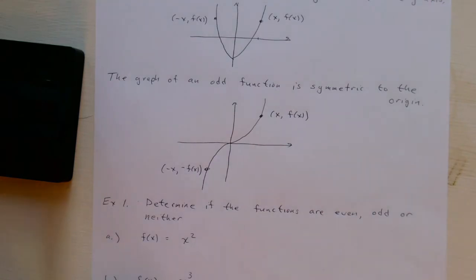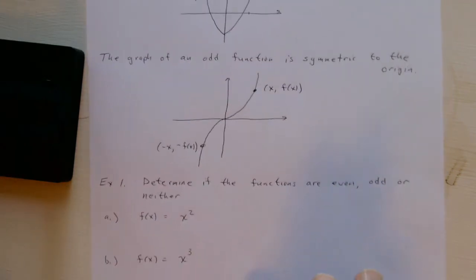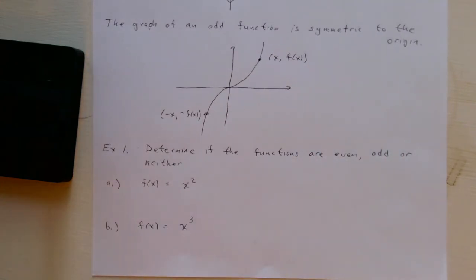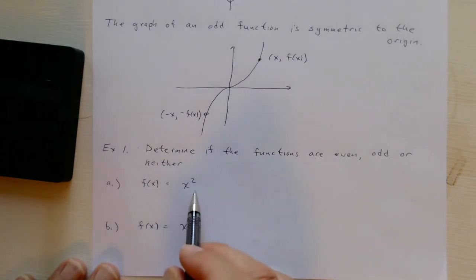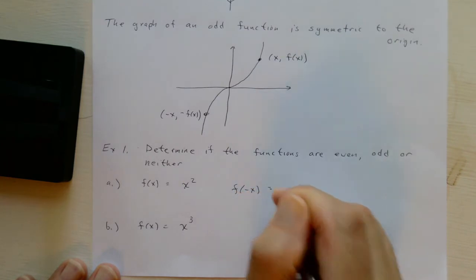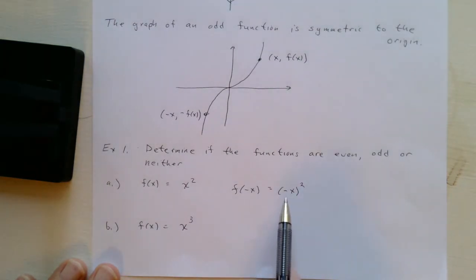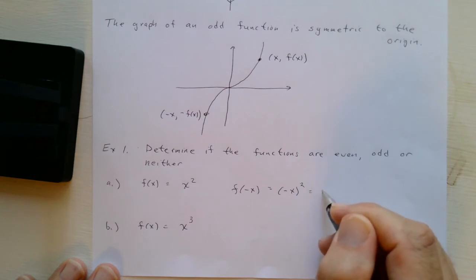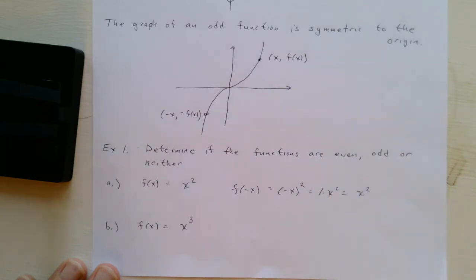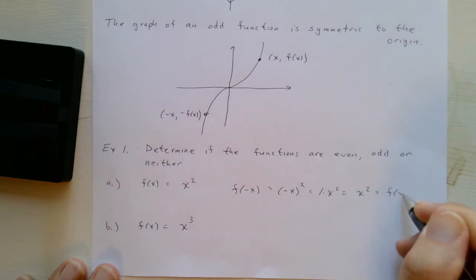To determine algebraically if a function is even or odd, we compute f(−x) and simplify. For example, if f(x) = x², then f(−x) = (−x)² = (−1)² · x² = x², which equals f(x). So this function is even.